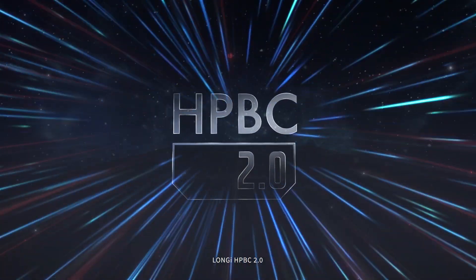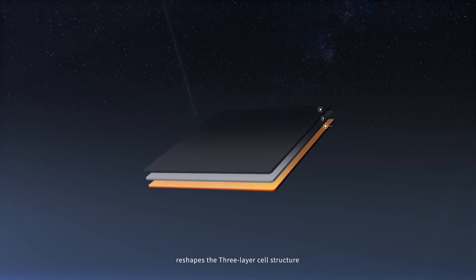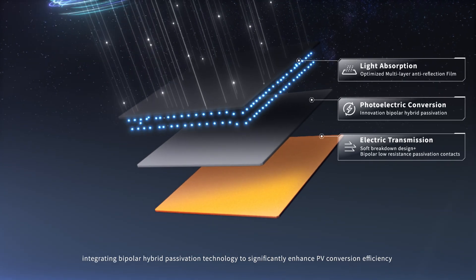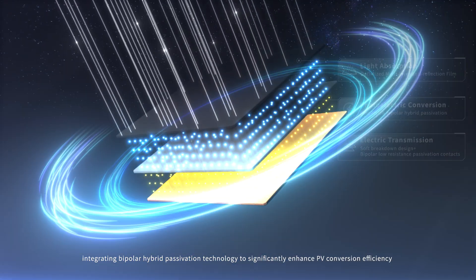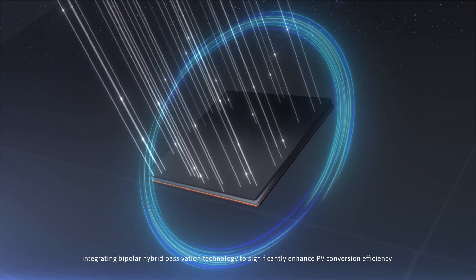Longgee HPBC 2.0 reshapes the three-layer cell structure, integrating bipolar hybrid acidation technology to significantly enhance PV conversion efficiency.